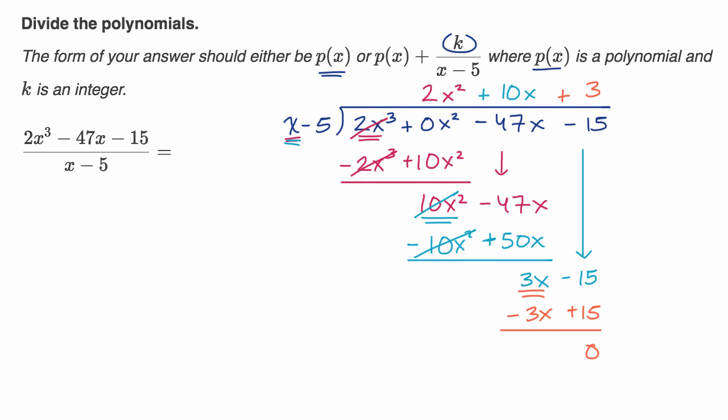So this whole thing you could re-express or simplify as 2x squared plus 10x plus three. And once again, if this was on Khan Academy, there would be a little bit of an input box that looks something like this. And you would have to type this in.